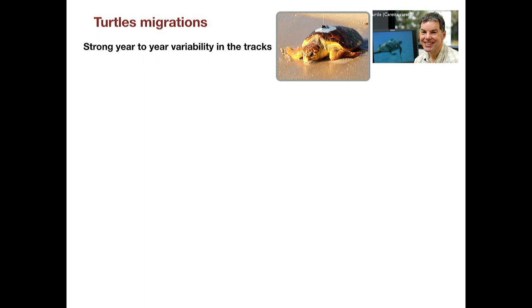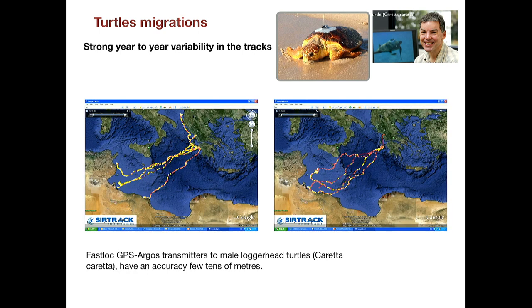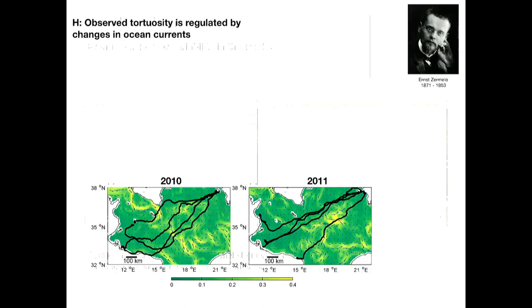A colleague, Graham Heiss, contacted me saying he has these nice, high precision tracks that change over the years quite often. For 2010 and 2011, they migrate from breeding ground in Greece to feeding ground in the African coast. For these years they are quite straight, while in other years it's a more convoluted path. One hypothesis was that it could be related to ocean currents.